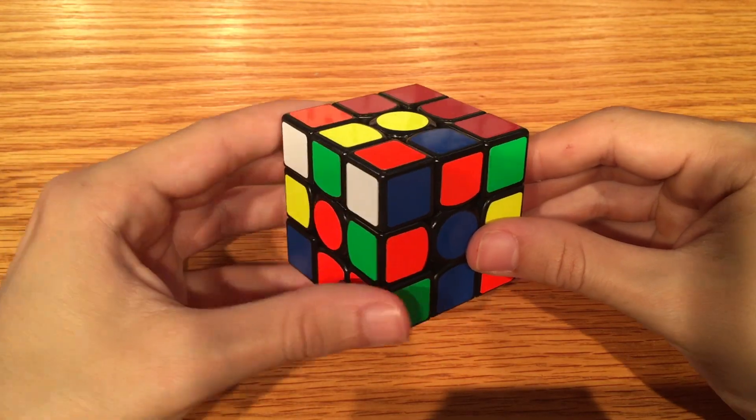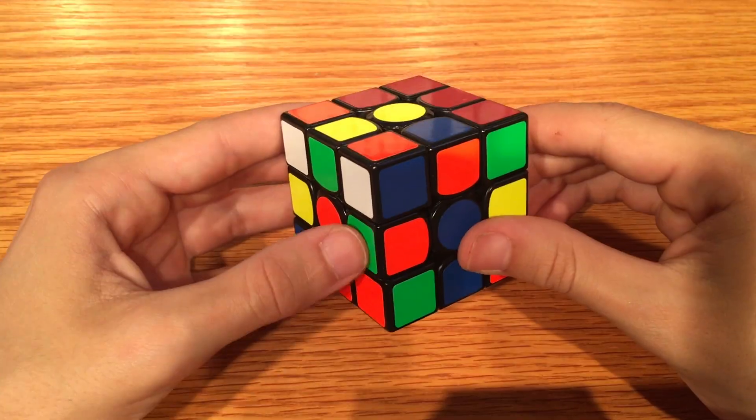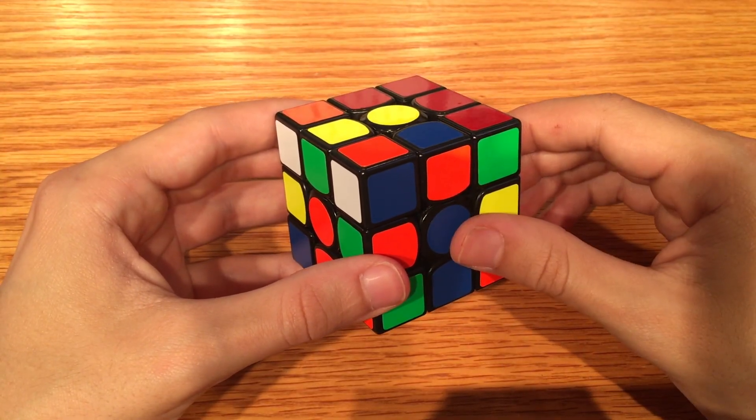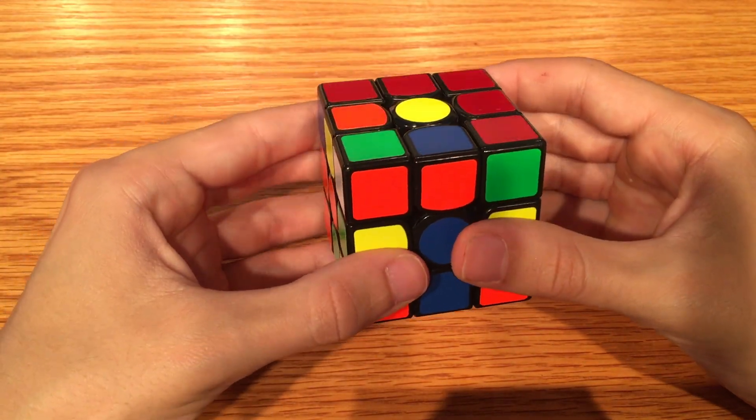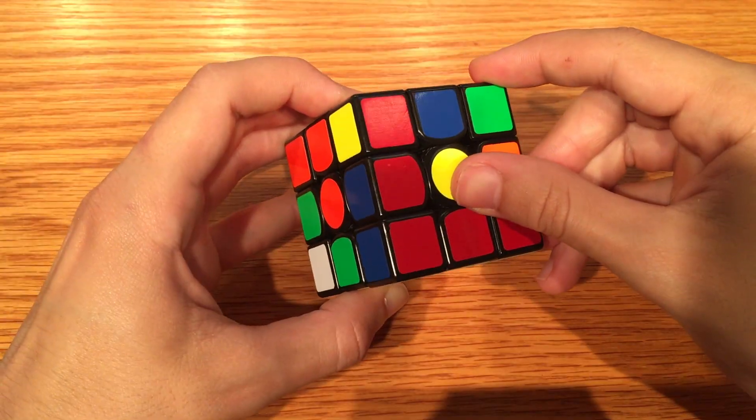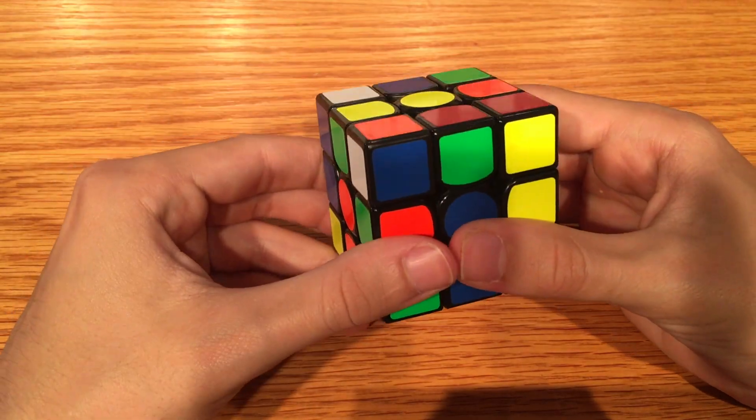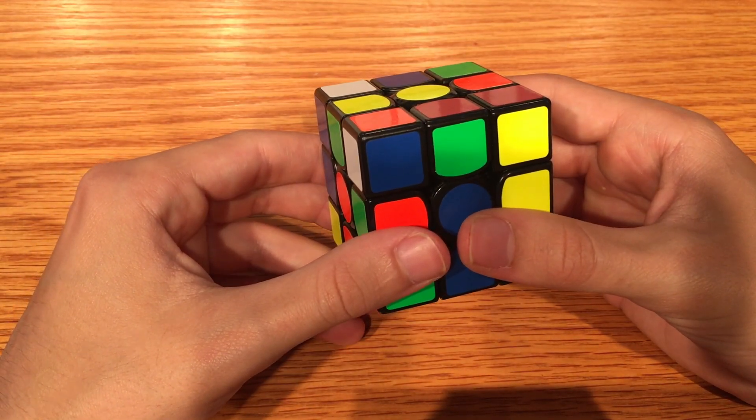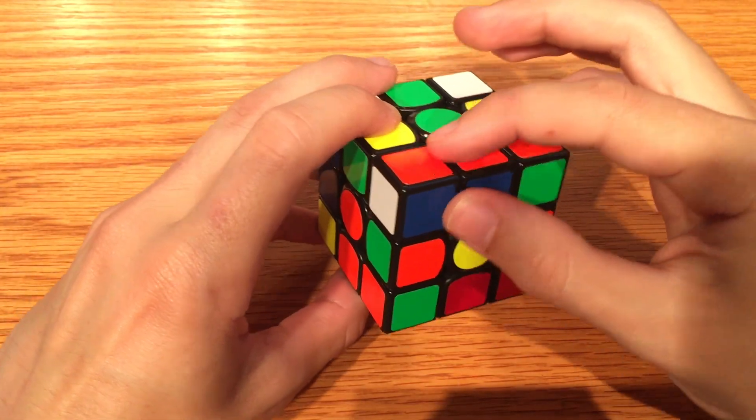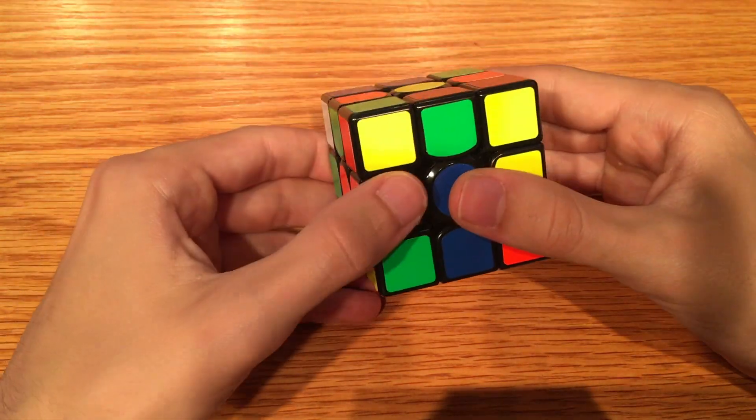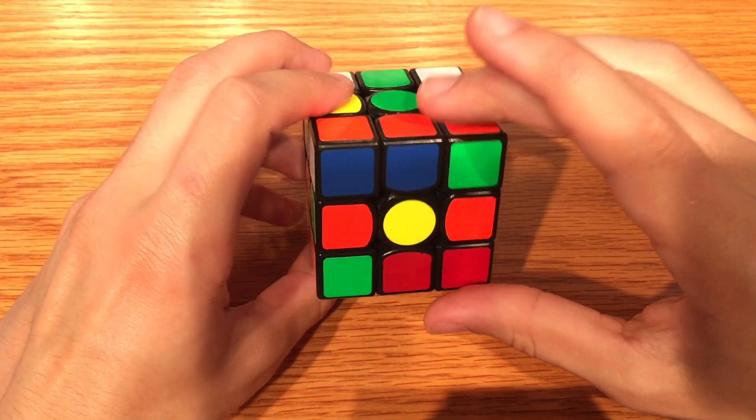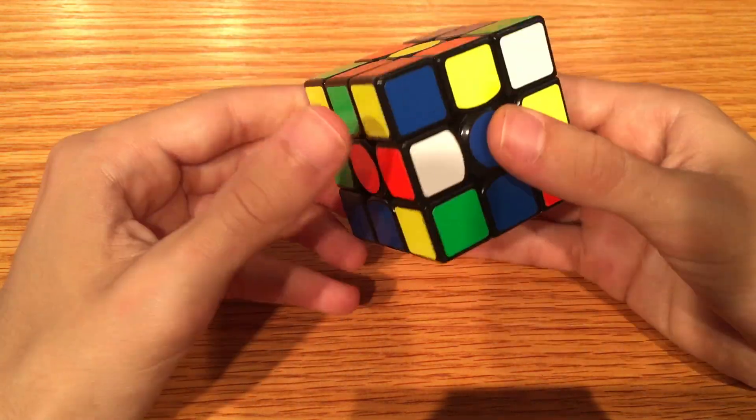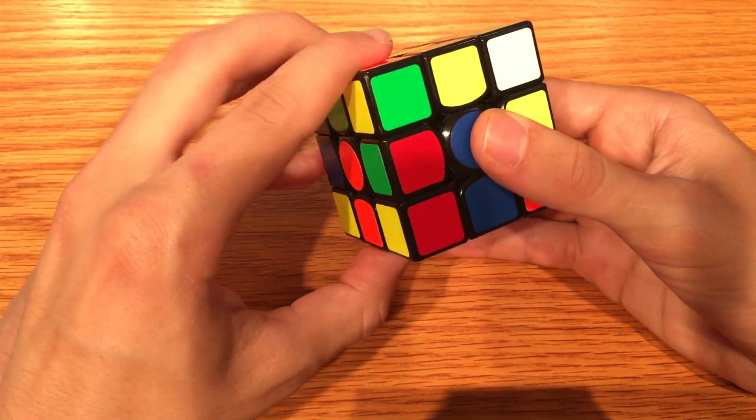Obstacle number three: you got the corner and edge together, but the edge is flipped wrong. To fix this, hide the corner, twist the edge to the back, and show the corner. Throw the corner up and they will pair. Again, this will mess up one of your cross pieces, so make sure to move the top layer so that your pair doesn't get moved when you reset the cross piece.